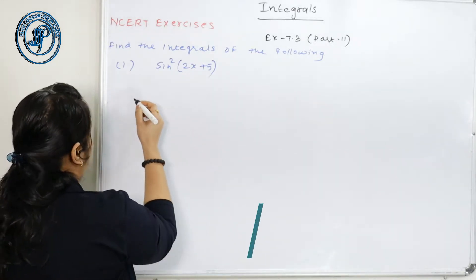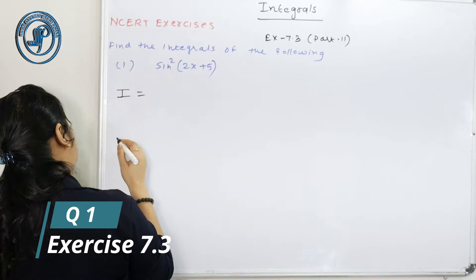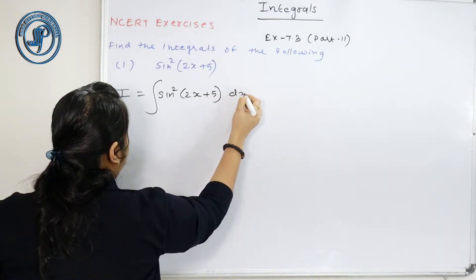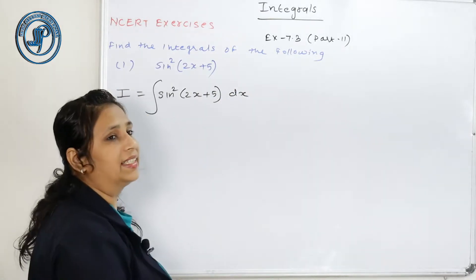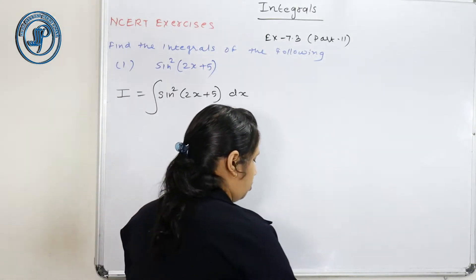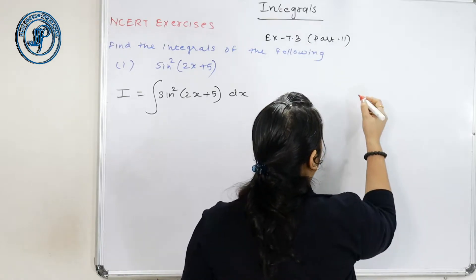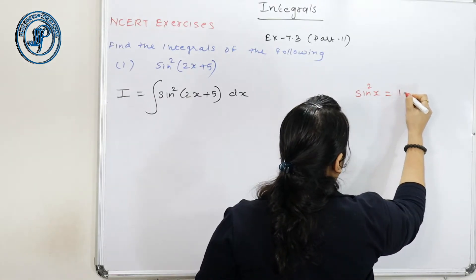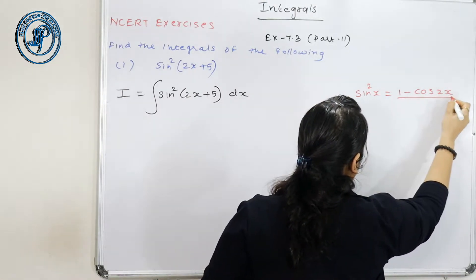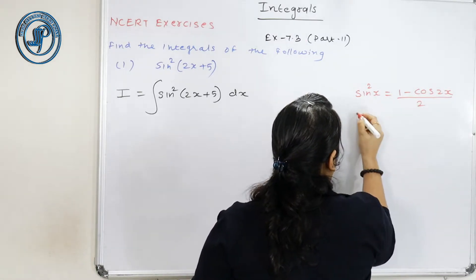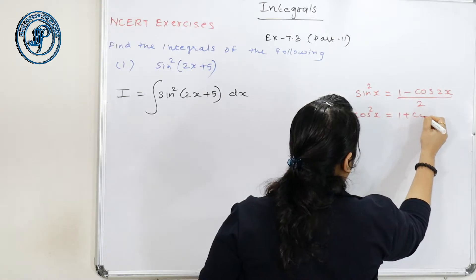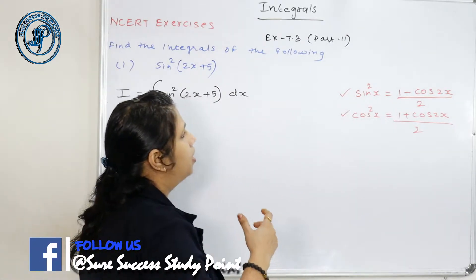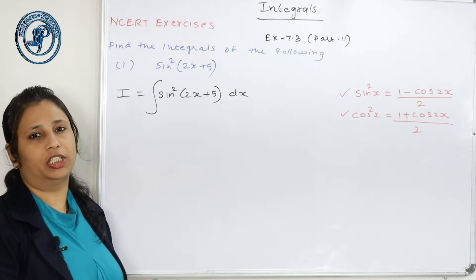Now we start integration using the trigonometric formula. First of all, for cos²x का integration करना हो, the formula is (1 + cos 2x) / 2. These two trigonometric formulas you should remember for integrating sin²x and cos²x.